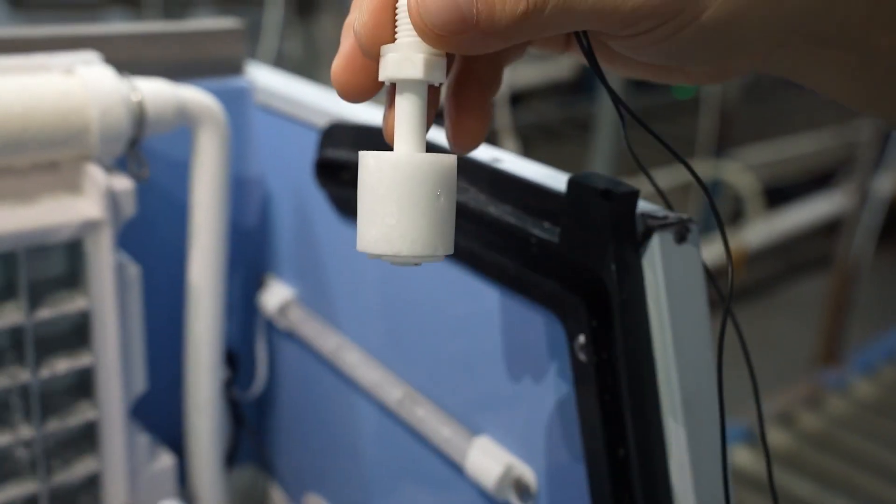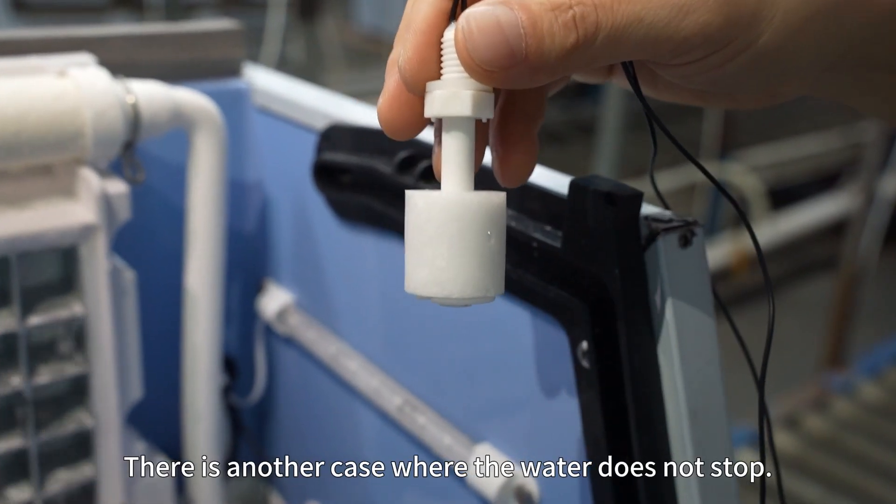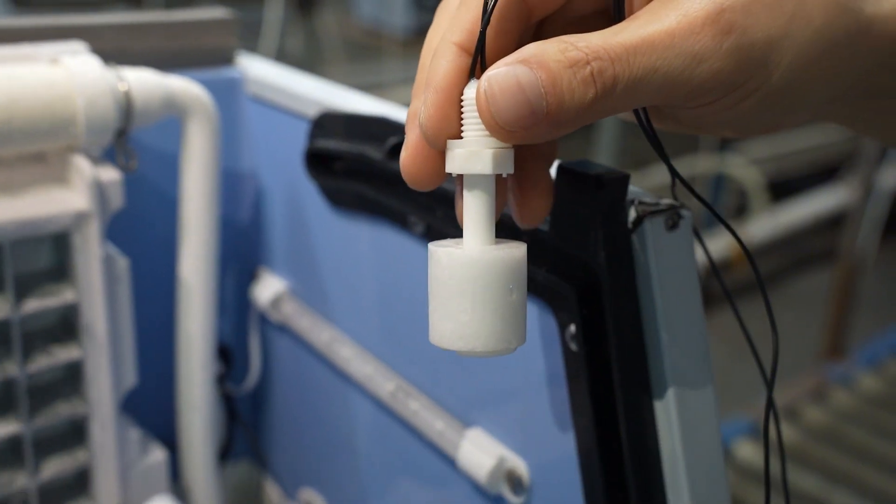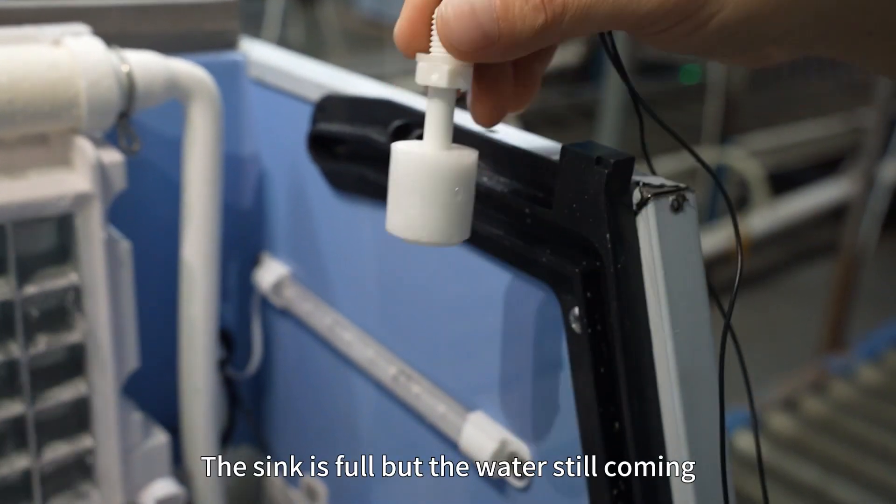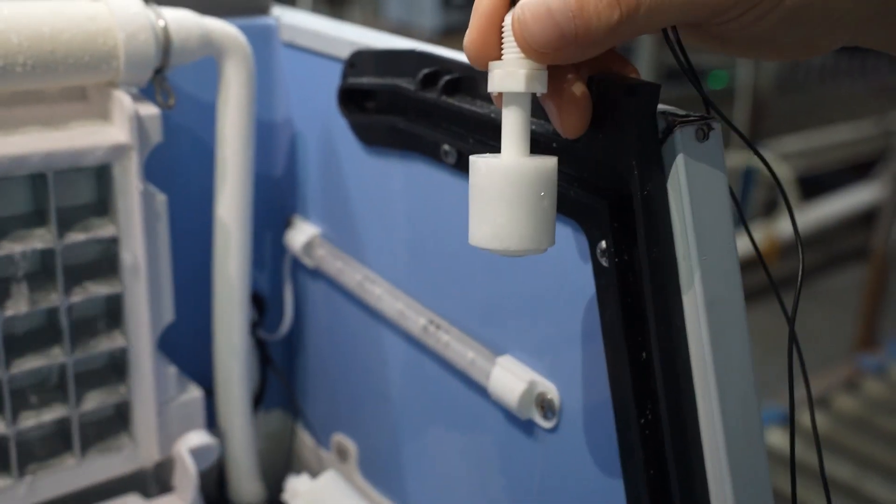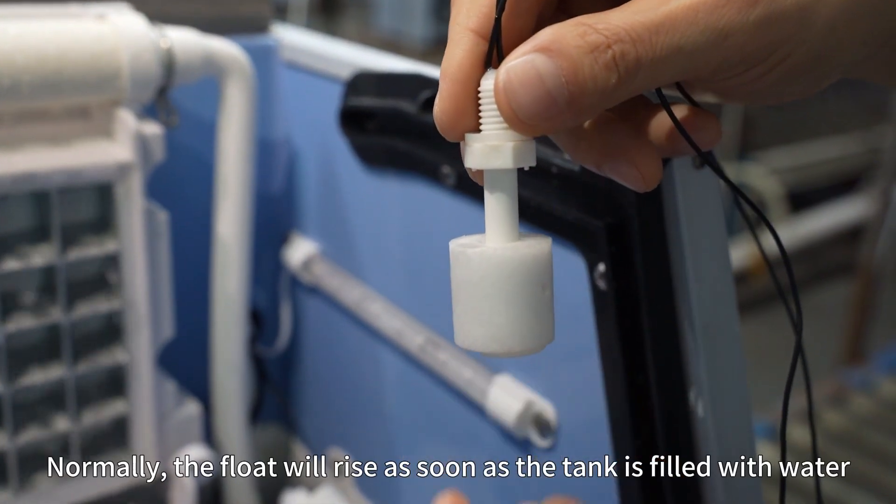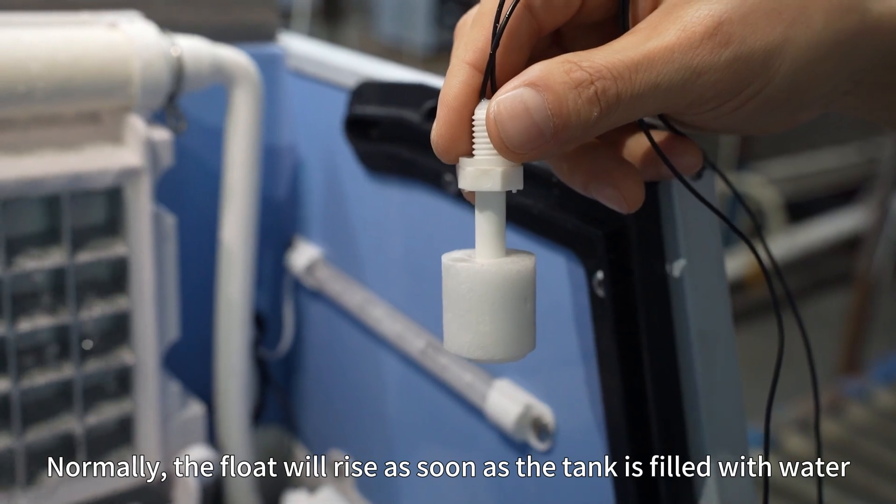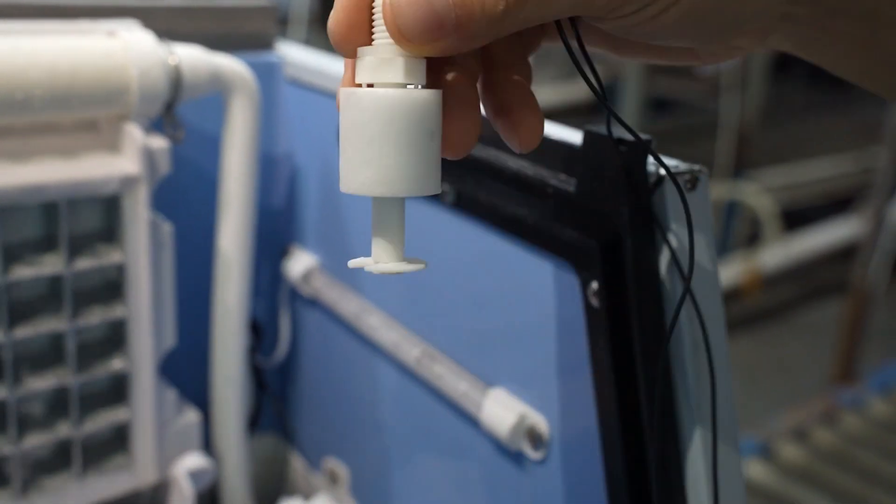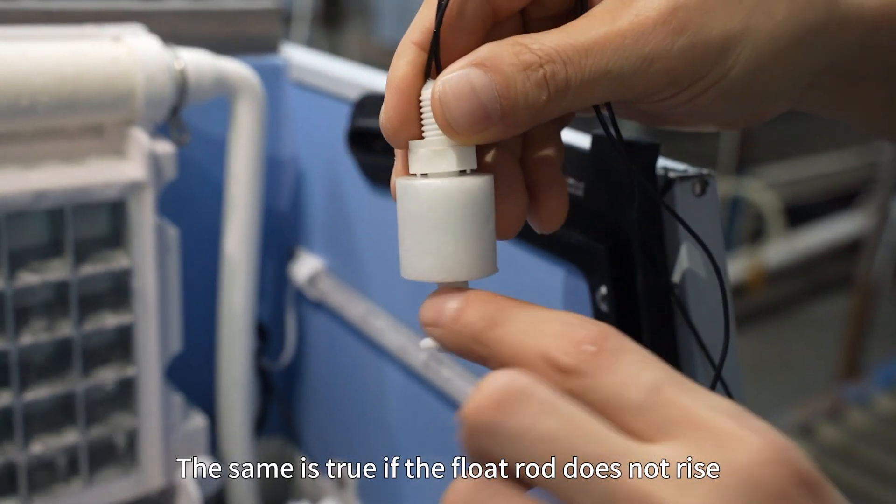There is another case where the water does not stop. The sink is full but the water is still coming. It's also possible that the float got stuck. Normally the float will rise as soon as the tank is filled with water. The same is true if the float rod does not rise.